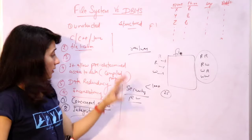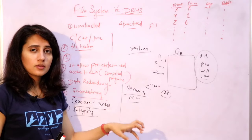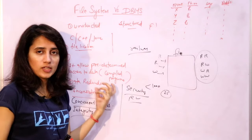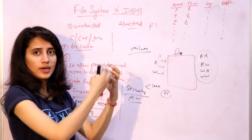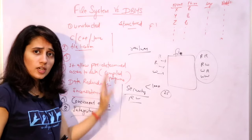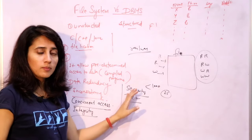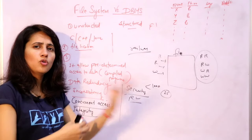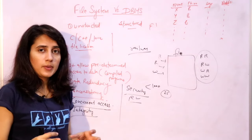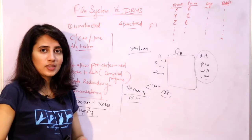On the basis of these points, we have compared file system and DBMS. You can write these as drawbacks of file system or as advantages of DBMS. These are not the only comparison points — there are many more. In the next video, I will discuss functional dependencies and then we will start normalization. See you in the next video. Bye-bye, take care.